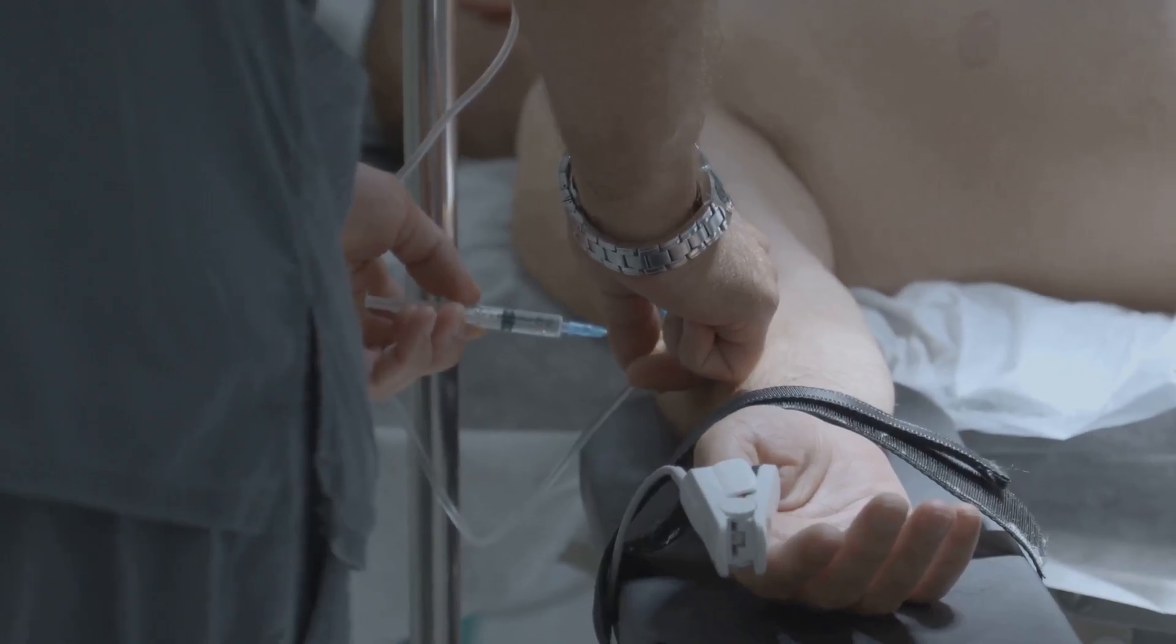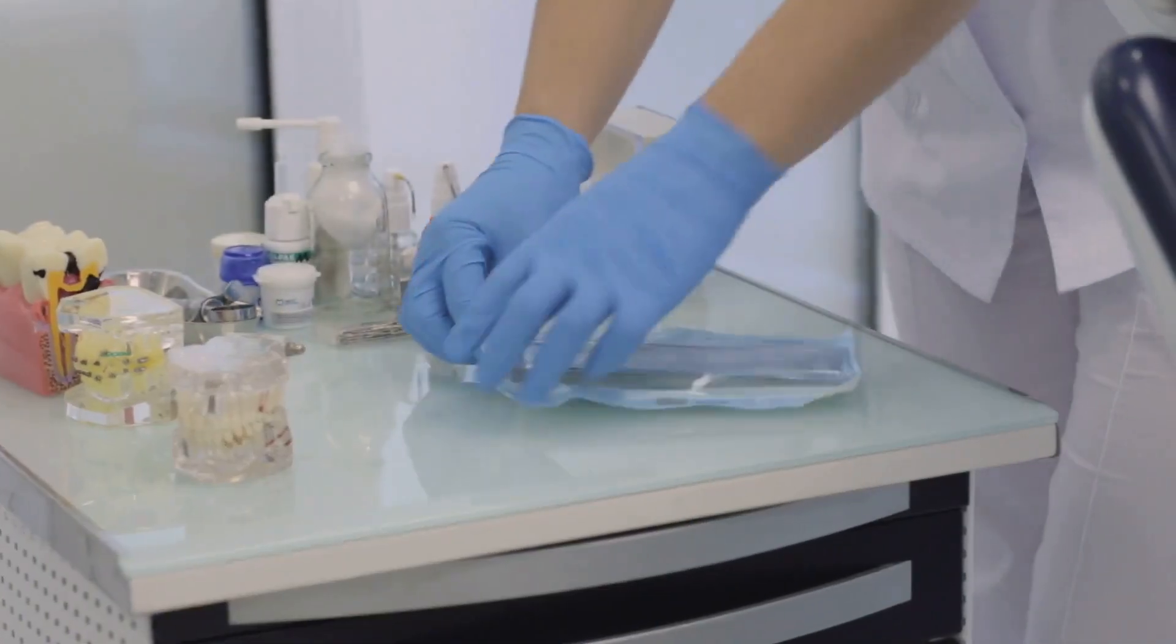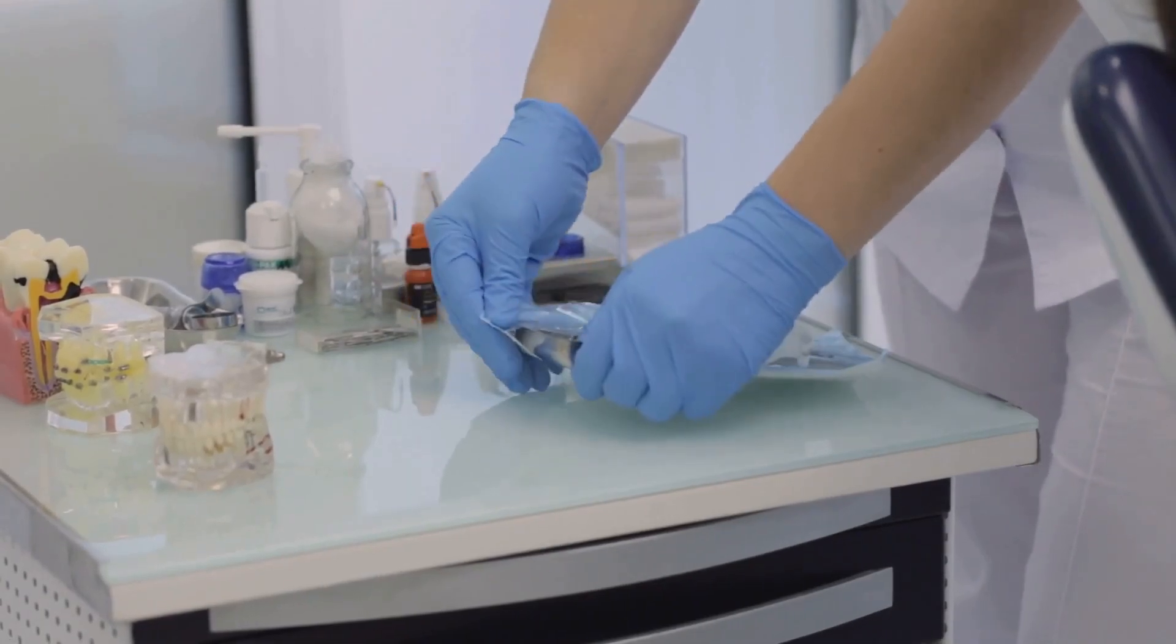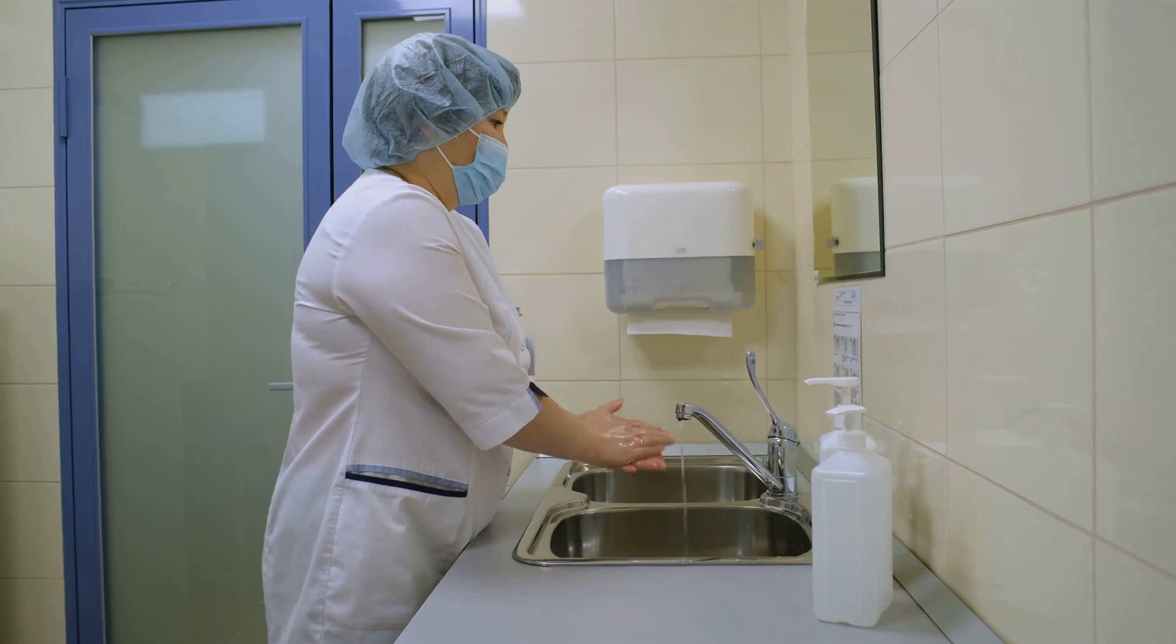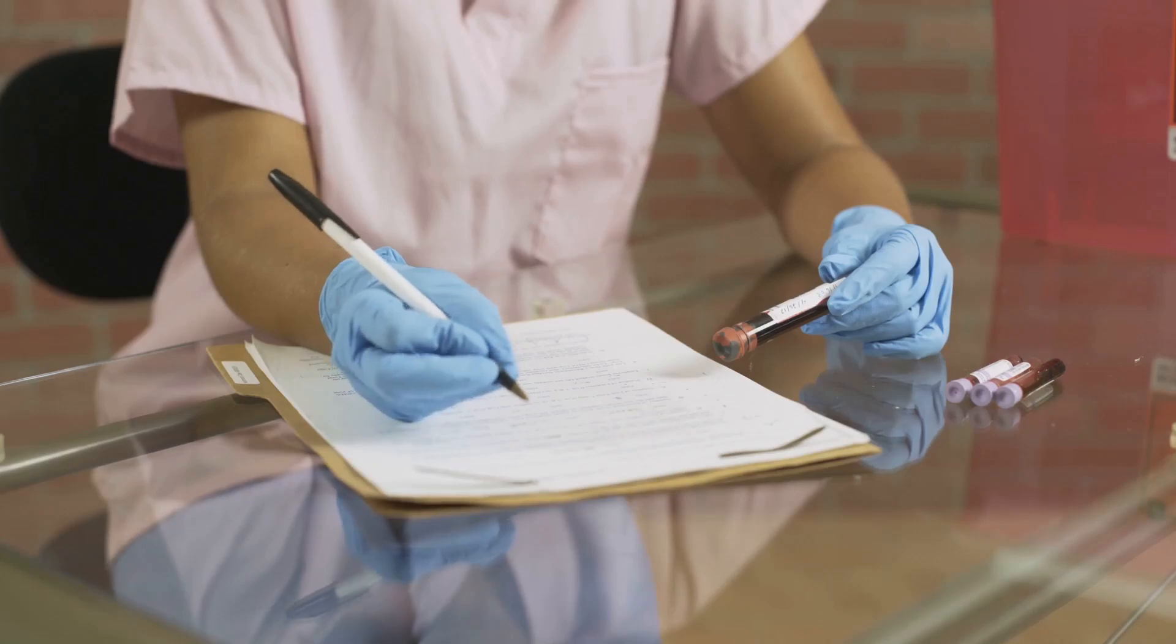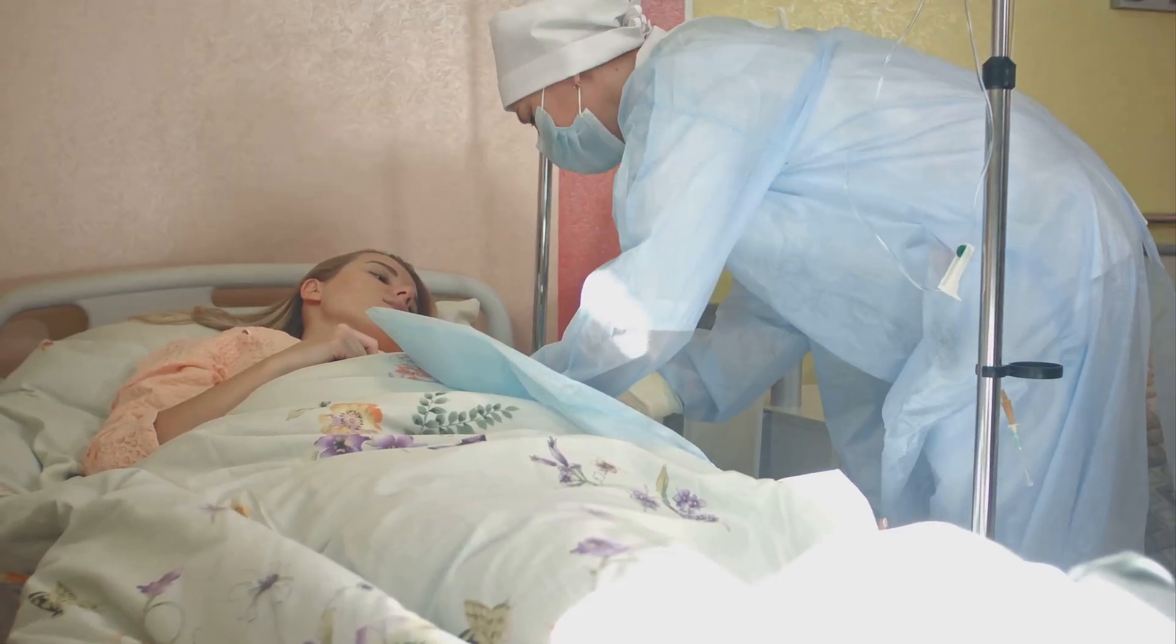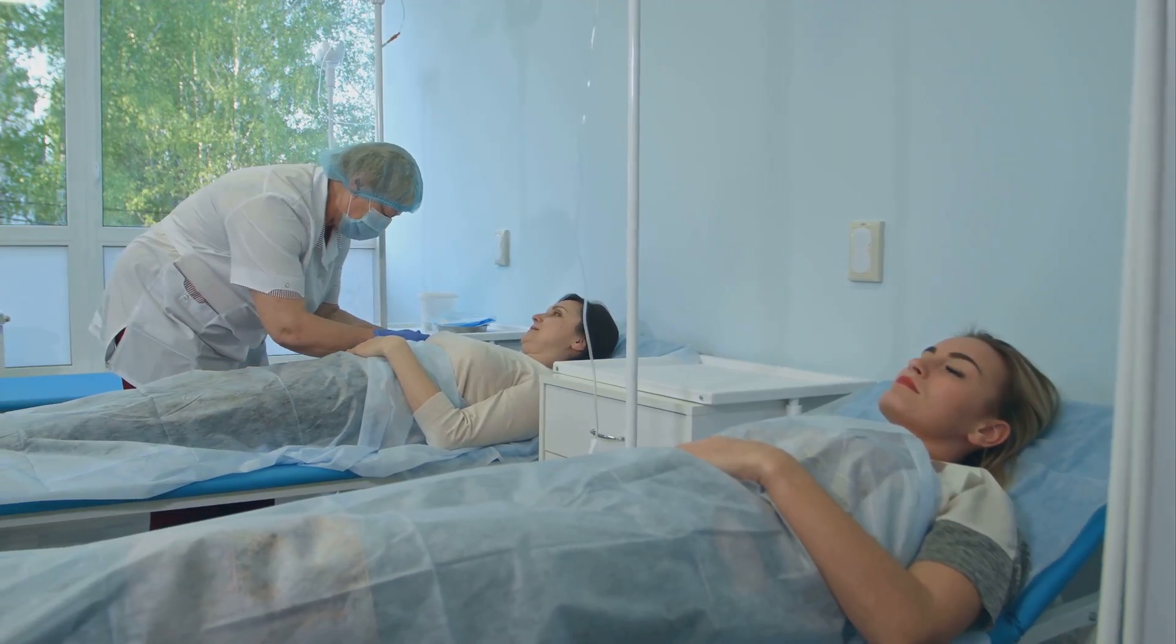Then there's the tourniquet, your best friend when it comes to finding those sometimes elusive veins. Don't forget the antiseptic wipes for cleaning the area, gauze pads for dressing the cannula, and a sharps container for safe disposal. Preparation is key. Always wash your hands thoroughly and gather all your equipment before starting. Check the patient's notes for any allergies or previous issues with cannulation. Explain the procedure to the patient and get their consent. Remember, a calm and confident approach can make all the difference.